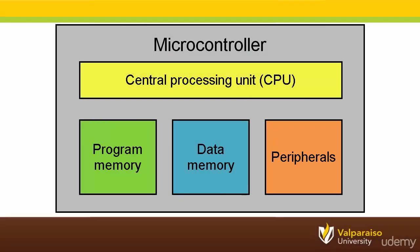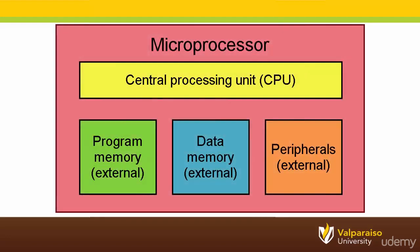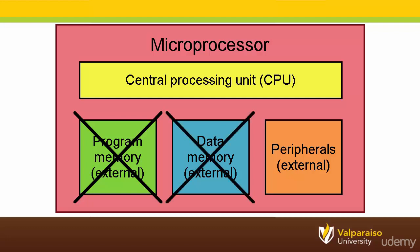While we have this block diagram of a microcontroller up, it's a good opportunity to graphically show the differences between microcontrollers and microprocessors. Microprocessors typically do not have any internal program memory and rely upon an external solid-state memory or magnetic hard drive to store their programs. Some microprocessors have a very small amount of data memory, often called cache. However, microprocessors generally rely upon an external integrated circuit or computer chip to store the majority of their data memory too. Finally, microprocessors generally do not contain the peripherals that are found inside of a microcontroller.